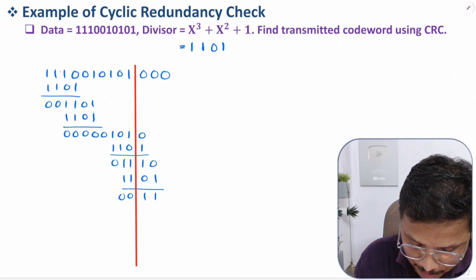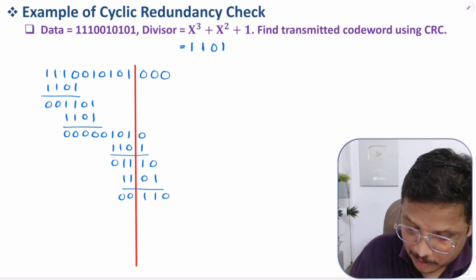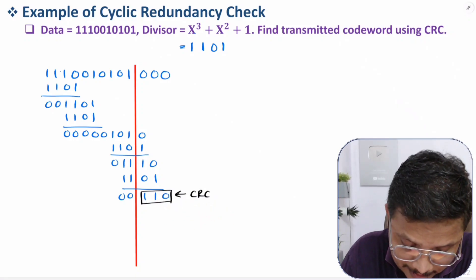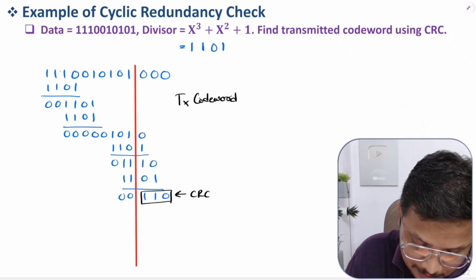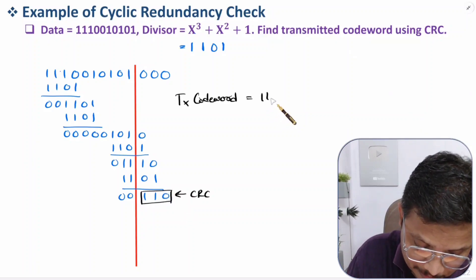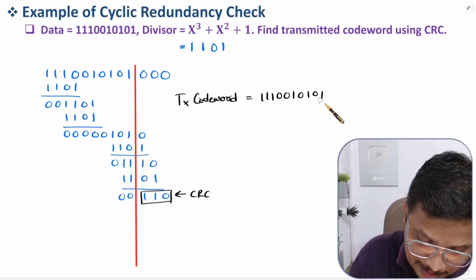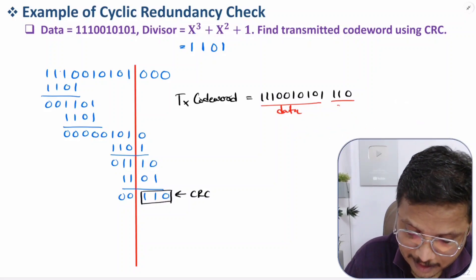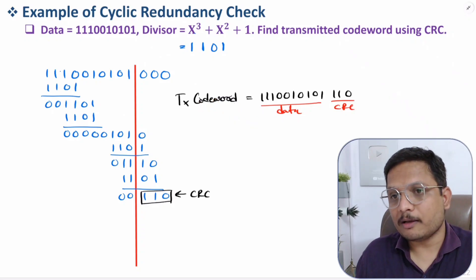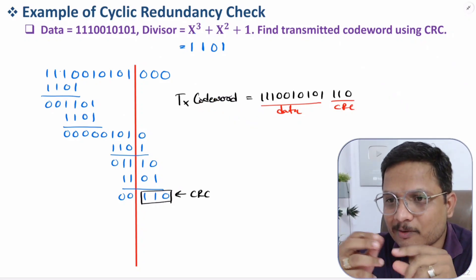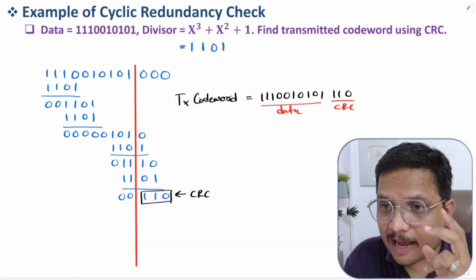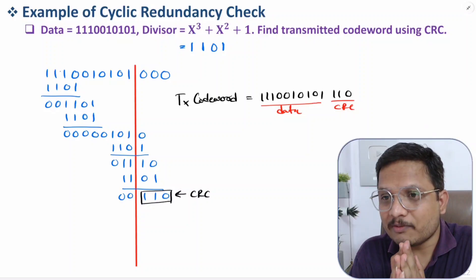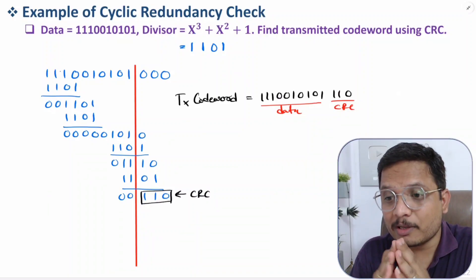Now we have all zeros on the left side. The last three bits give us the CRC: 1 1 0. The transmitter codeword is data plus CRC — data is 1 1 1 0 0 1 0 1 0 1 0 1 and CRC is 1 1 0. That is how simply we generate the codeword. When the receiver receives this data there may be errors; I will explain how to identify errors in the next video. I hope CRC calculation is clear — if you have questions, please note them in the comments. Thank you for watching.